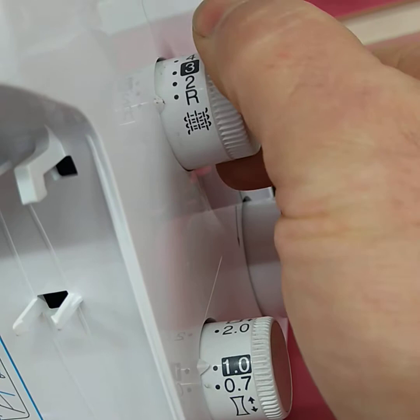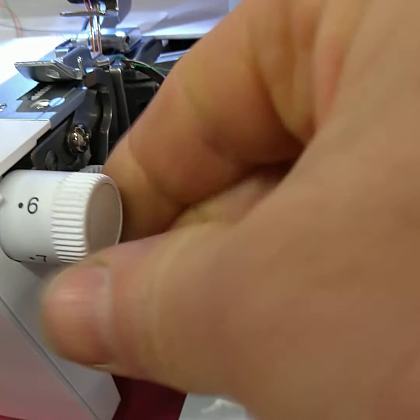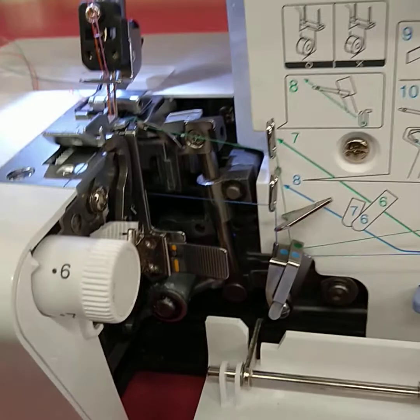On top of that is the stitch length. So we've got R, which is for the rolled hem, which is a very short stitch. And then you go 2-3, the general setting would be a 3, and likewise with the stitch width would probably be a 6.